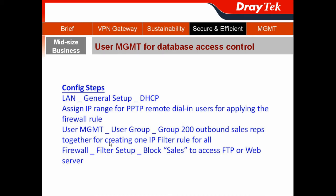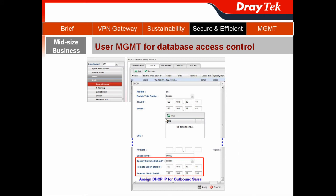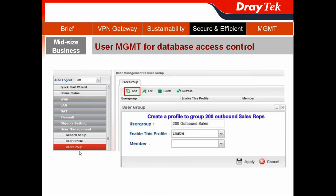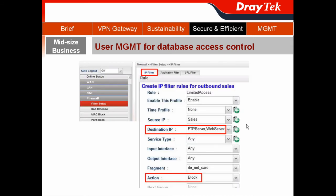Then go to the firewall filter setup to block sales from accessing FTP or web server. First, go to LAN and choose General Setup, then choose the DHCP tab. Here, enable the specified remote dialing IP and assign the DHCP IP for the outbound sales, and hit Apply. Then use the user group to create one profile to group the 200 outbound sales reps. The last step: go to Firewall and choose Filter Setup. In the IP Filter tab, create the IP filter rule for the outbound sales reps.